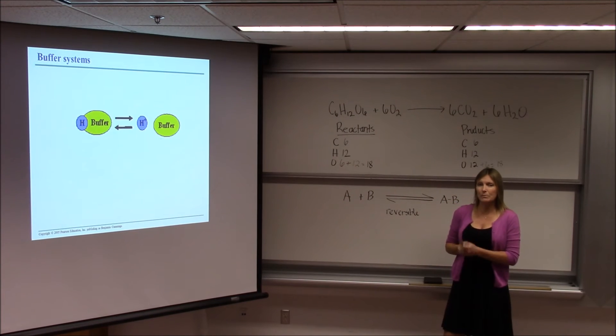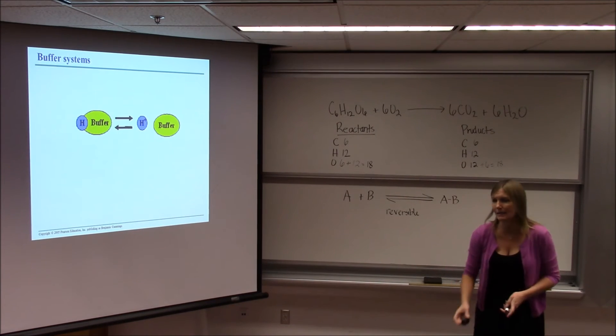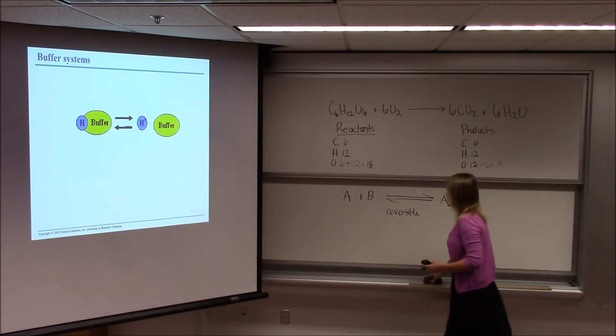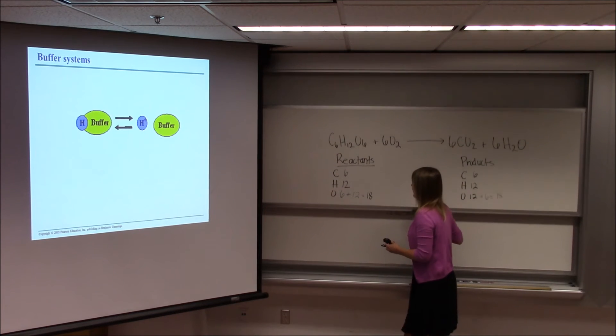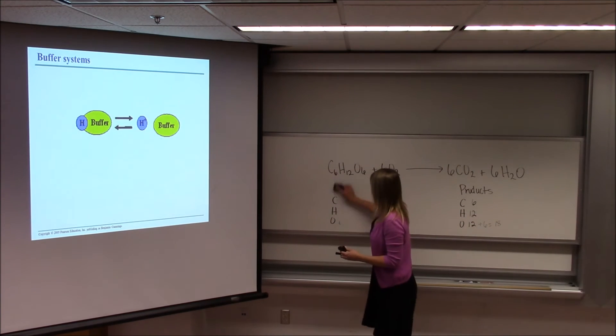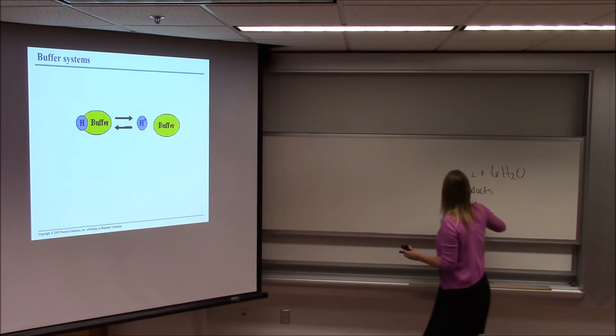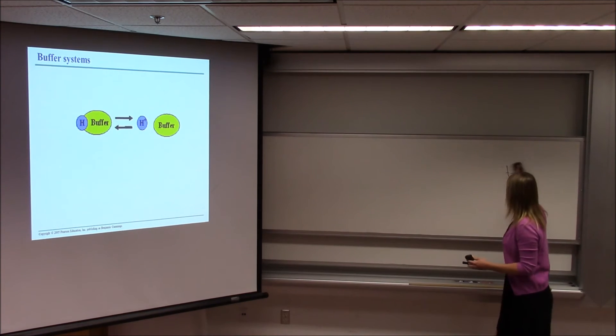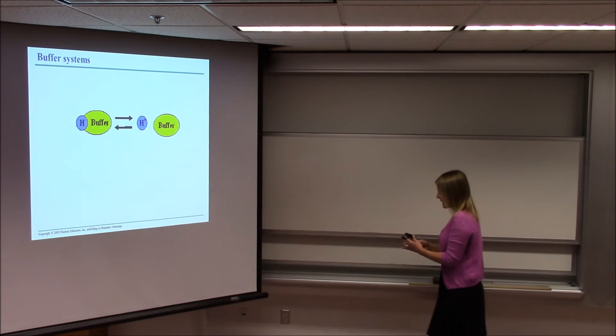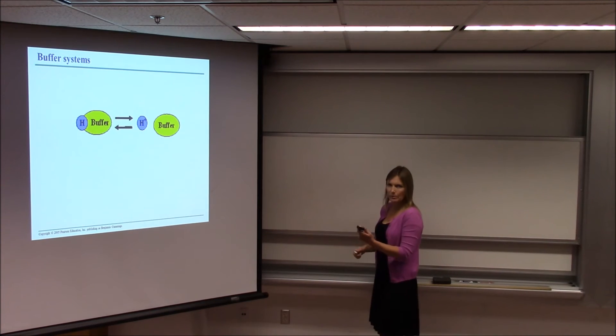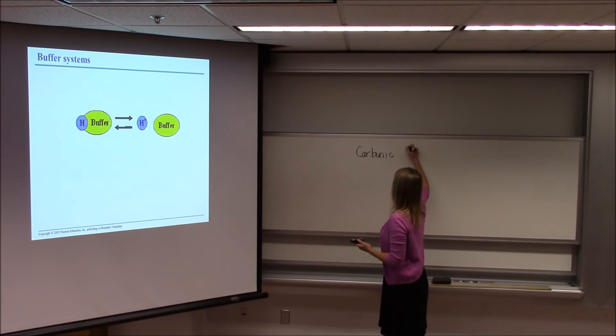So now let's look at an actual real buffer system, not just a cartoon buffer system. Let's look at a real buffer system. We're going to look at the carbonic acid buffer system as our example. The carbonic acid buffer system is one of many important buffer systems in the human body. And it's a very good example of how buffer systems work.